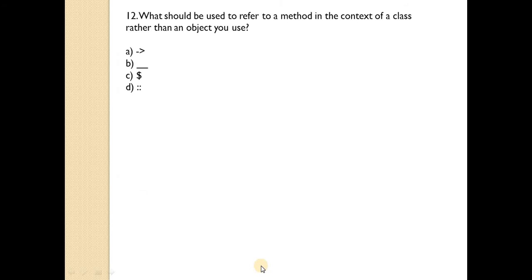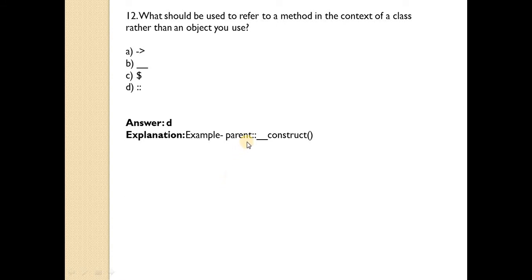What should be used to refer to a method in the context of a class rather than an object? Answer is D — the scope resolution operator. Parent scope resolution operator followed by double underscore construct can be used.